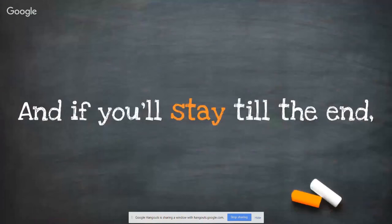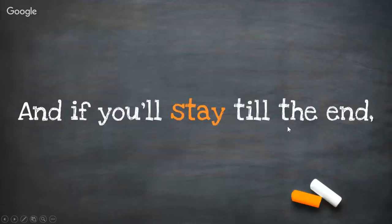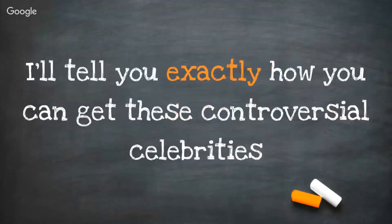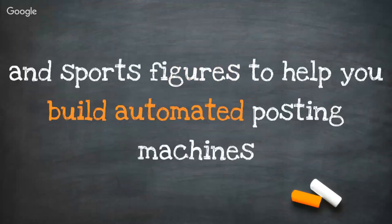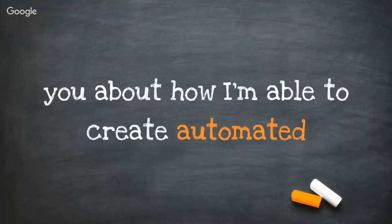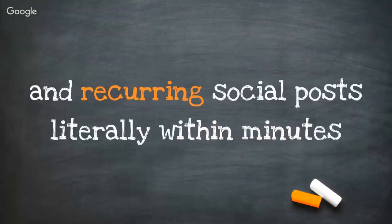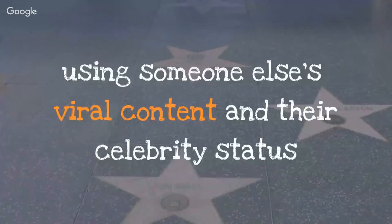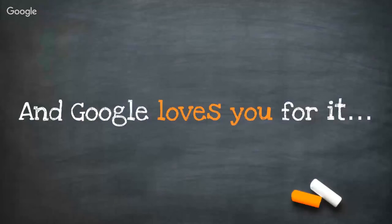My question is: what do these three people have in common and how can they help you make money in just the next few hours? I'll tell you exactly how you can get these controversial celebrities and sports figures to help you build automated posting machines. My name's Damon Nelson, and today I'd like to share a secret about how I'm able to create automated and recurring social posts within minutes using someone else's viral content and their celebrity status — and Google actually loves you for it.